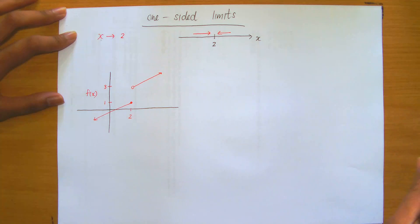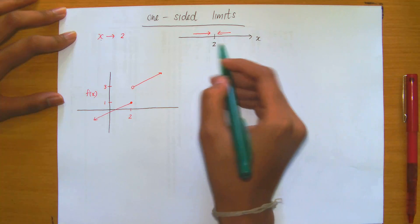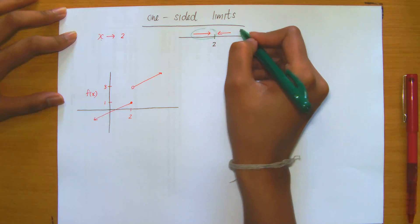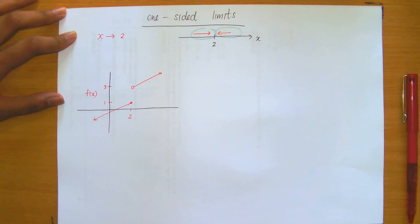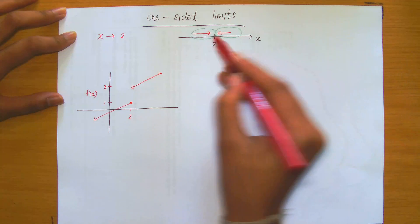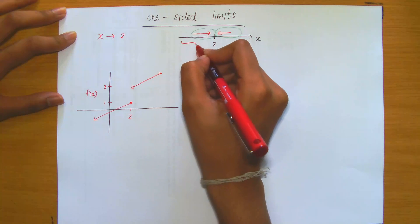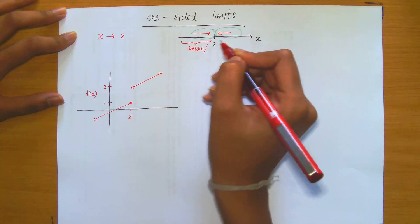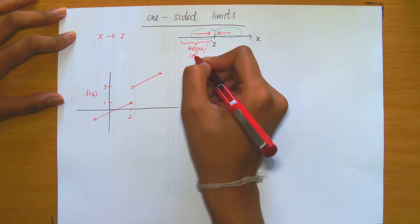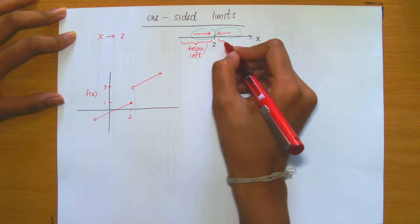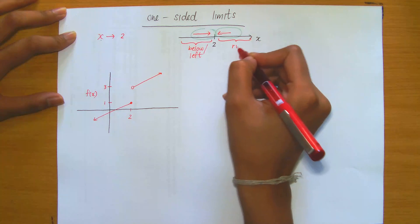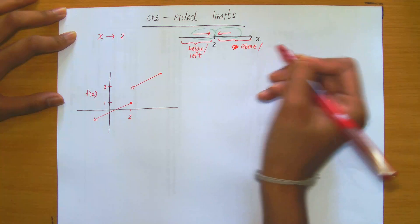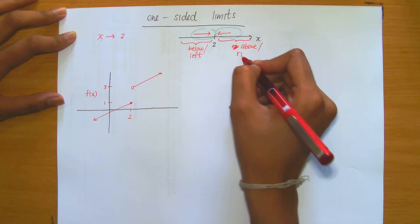When we talk about one-sided limits, we are essentially talking about approaching a number from one side only — meaning either from the left or only from the right. For all values less than 2, we term this 'below,' or alternatively, 'from the left.' And for all values on the number line greater than 2, we term this 'above,' or sometimes 'from the right.'